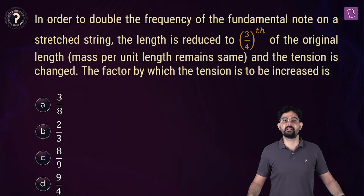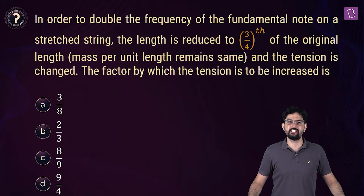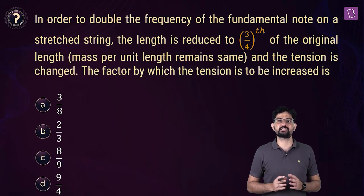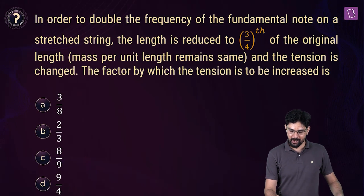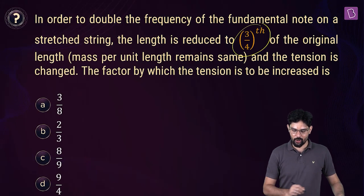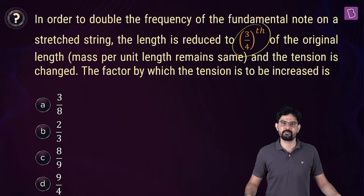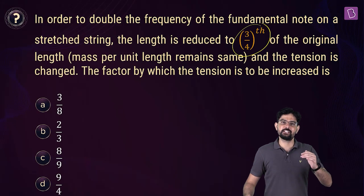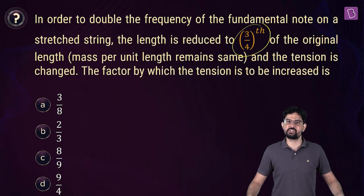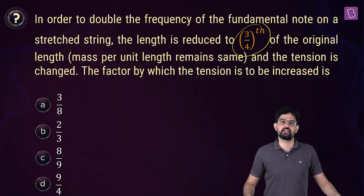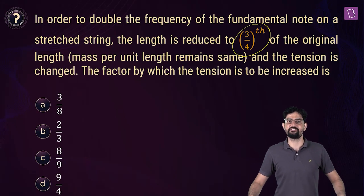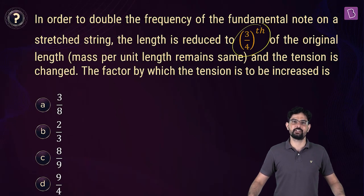To double the fundamental frequency on a string fixed at both ends, its length is reduced to 3/4 of the original length. The mass per unit length (mu) doesn't change, and you have to find by what factor the tension should be increased to achieve this.